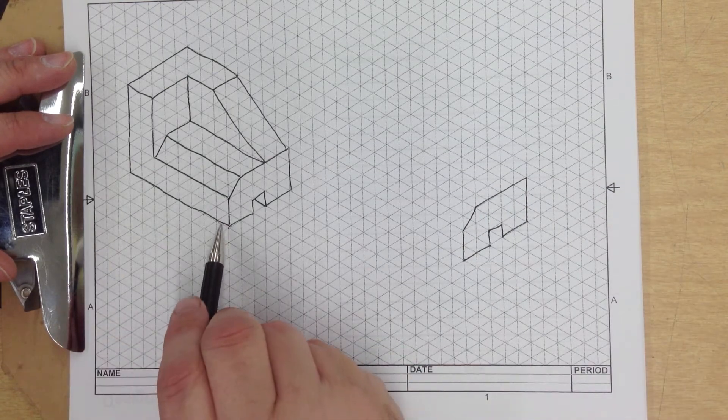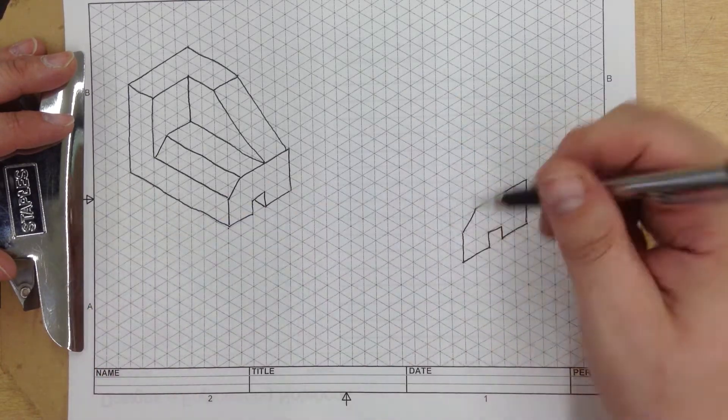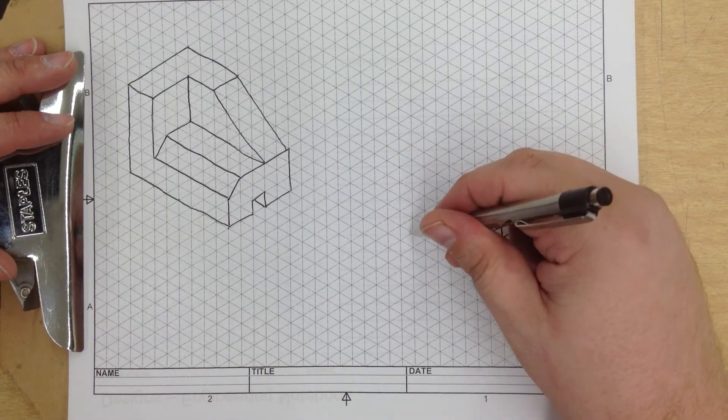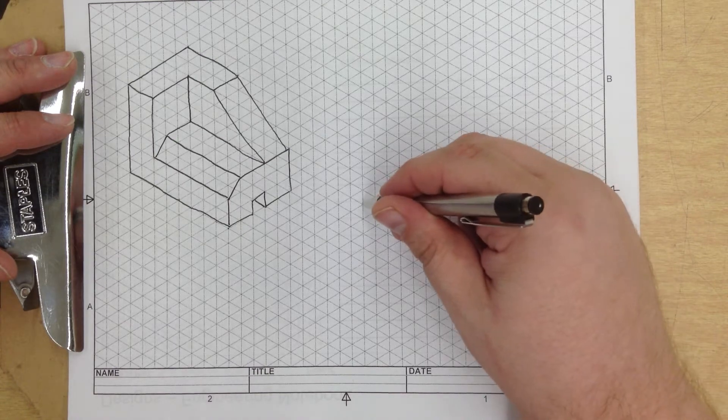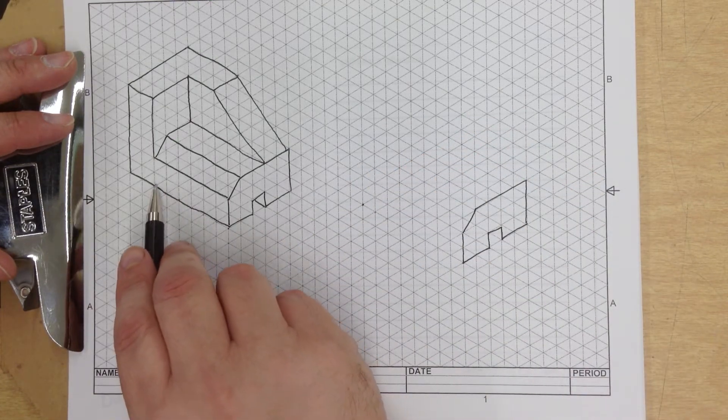Now if we check it from the origin point, one, two, three, four, five, six, seven, eight. One, two, three, four, five, six, seven, eight. I'm just going to double check that. One, two, three, four, five, six, seven, eight.